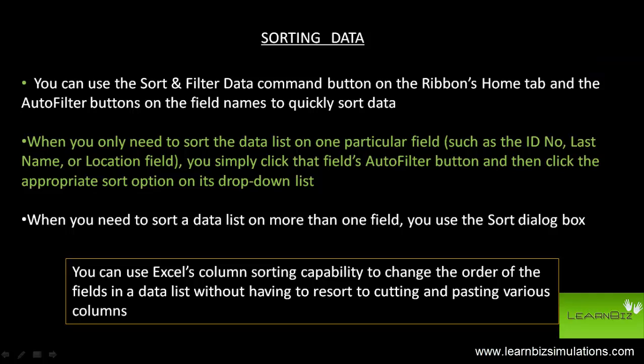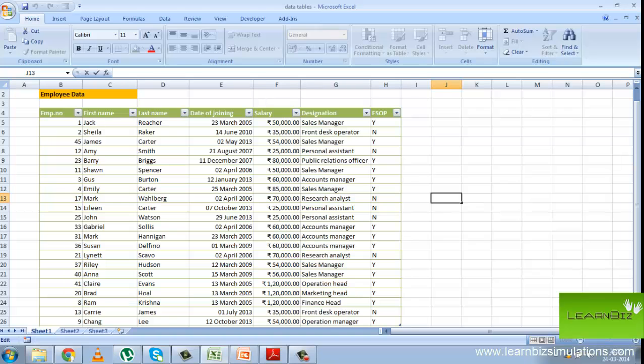Next, we look at how to sort data. You can use the sort and filter data command on the ribbon home tab and the auto filter buttons to quickly sort data. When you need to sort the data list on one particular field, this method is very easy. But suppose you need to sort the data list on more than one field, you use the sort dialog box. You can also sort the data list columns without copying and pasting the entire thing.